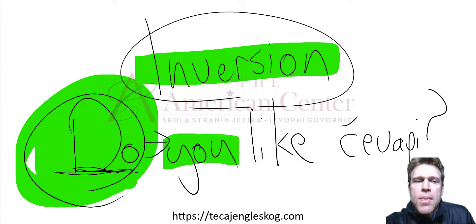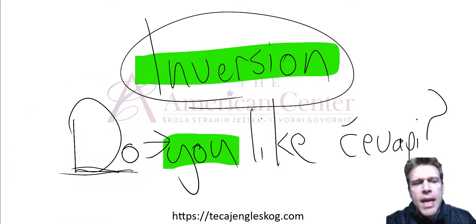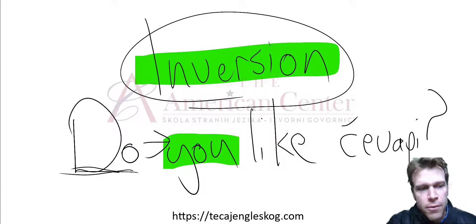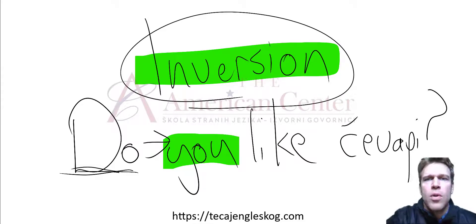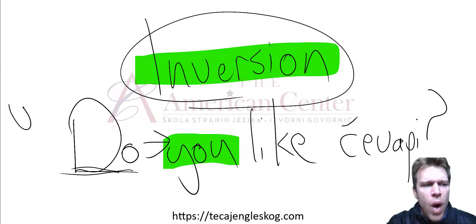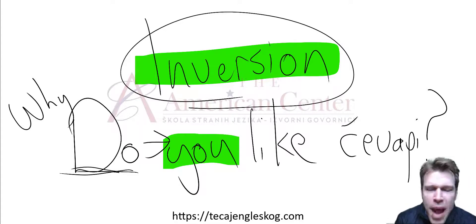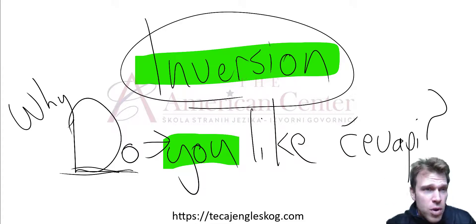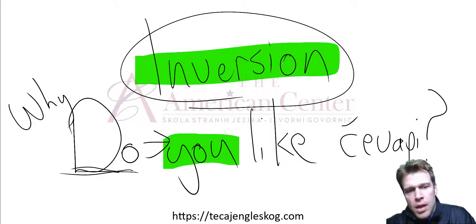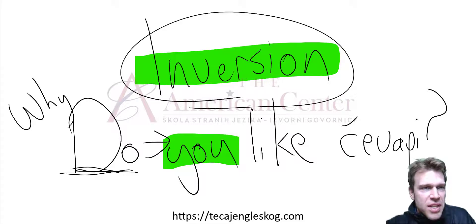We can make it more specific. If we don't want to ask a yes or no question, we put a WH word in front. For example, 'Why do you like ćevapi?' — because it tastes good, it's juicy, it melts in your mouth, the smell is like nothing else. So this is not yes or no; we're digging for specific information. Normal questions can be asked with any tense.